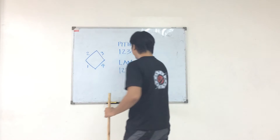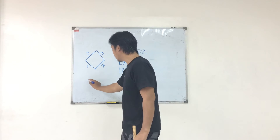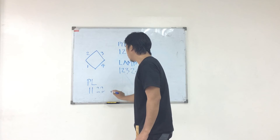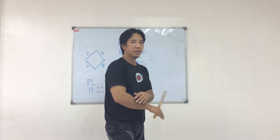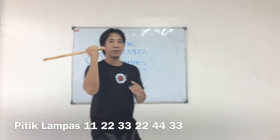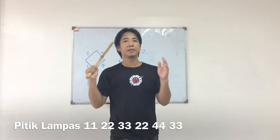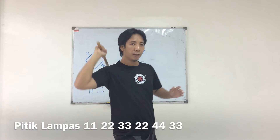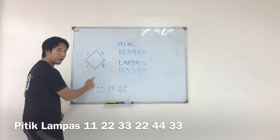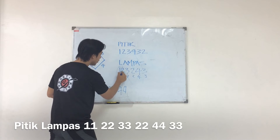I'll give you an example. If we mix the pitik and the lampas strikes, we can do one one, two two, three three, four four — it's pitik then lampas. So pitik one and lampas one, pitik two and lampas two, pitik three and lampas three. We can do the same series of numbers: one two three two four three. When you perform a pitik lampas it's like this: one one, two two, three three, two two, four four, three three.